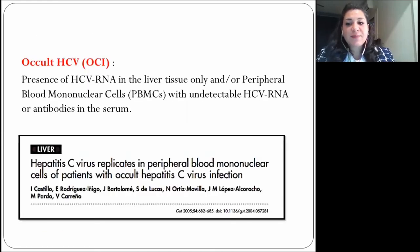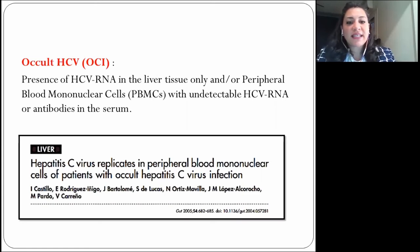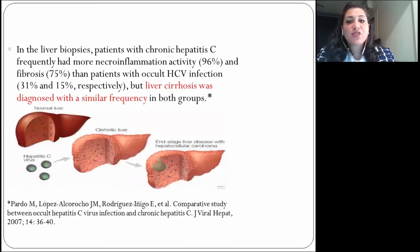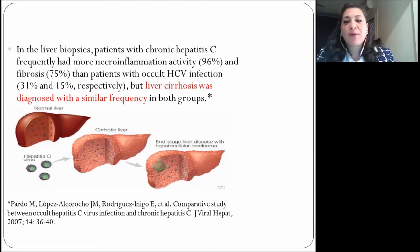L'hépatite C occulte est définie par la présence d'ARN du virus de l'hépatite C dans le tissu hépatique et/ou les cellules mononucléaires du sang périphérique, avec un ARN du virus de l'hépatite C indétectable dans le sérum ainsi que des anticorps négatifs. Ceci a été décrit par Castello et collaborateurs en 2005, qui ont trouvé le virus répliquant dans les cellules mononucléaires du sang périphérique. Pour les biopsies hépatiques, les patients atteints d'hépatite C présentent fréquemment plus de nécro-inflammations et plus de fibrose que les patients atteints d'hépatite occulte, mais une stéatose du foie a été diagnostiquée avec une fréquence similaire dans les deux groupes, selon Prado et collaborateurs en 2007.